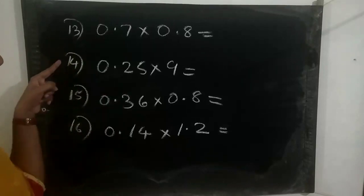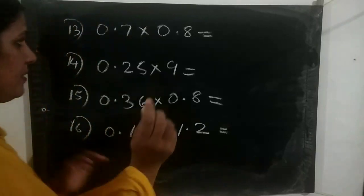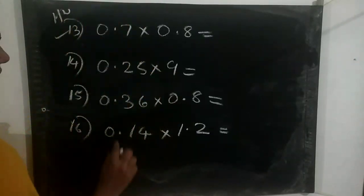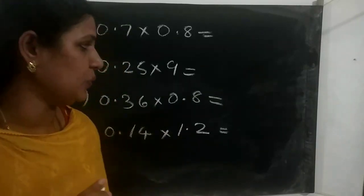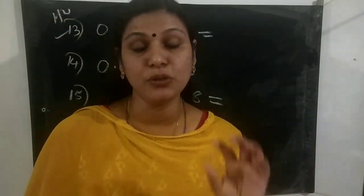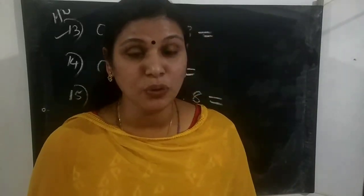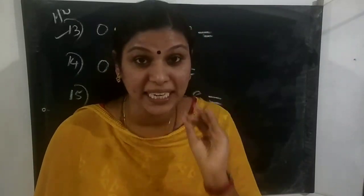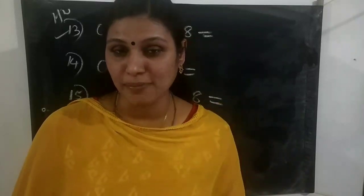Children, question numbers 13, 14, 15, and 16 you have to do yourself as homework. Carefully do this because of the decimal point — put the decimal point correctly. Carefully multiply and carefully put the decimals. Today's portion — you should watch each problem 2 or 3 times, and after that only write in your notebooks, study 2 times, and send those notes to me. Thank you.